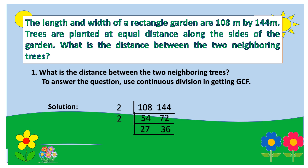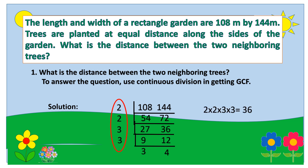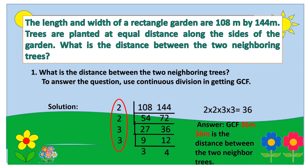Then again, think of a number that is divisible by 27 and 36, and that is 3. So 27 divided by 3 equals 9, and 36 divided by 3 equals 12. Then think of a number divisible by 9 and 12, and that is 3. 9 divided by 3 equals 3, and 12 divided by 3 equals 4. Since the numbers below are already prime numbers, we stop there. All the numbers on the left, we will multiply: 2 times 2 times 3 times 3 equals 36. Therefore, the GCF is 36 meters — 36 meters is the distance between the two neighboring trees.